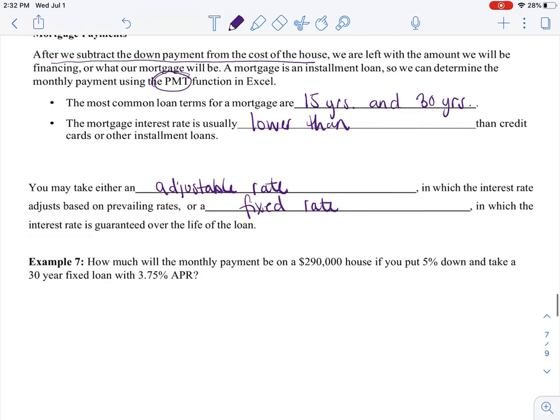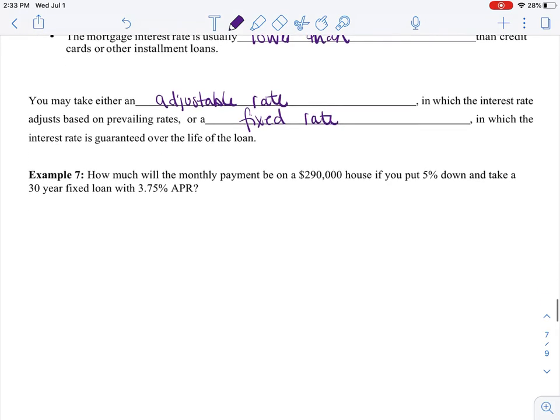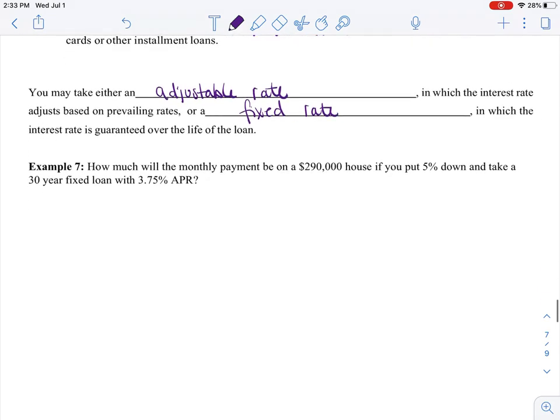So our last example: How much will the monthly payment be on a $290,000 house if you put five percent down and you take a 30 year fixed loan with 3.75 percent APR? All right, so key thing, how much will the monthly payment be? So I'm going to use my payment function.